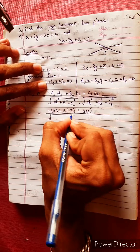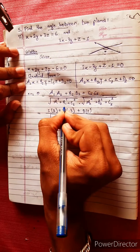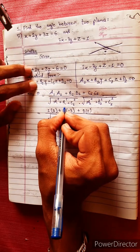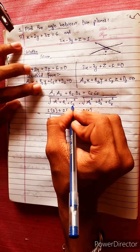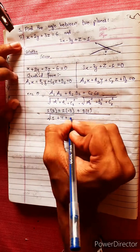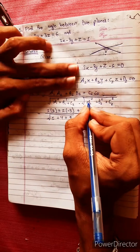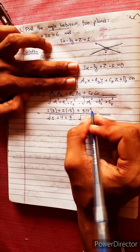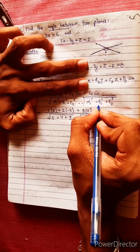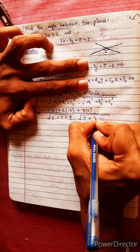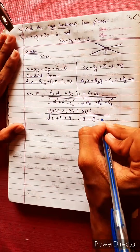Now computing the squares: A1 squared is 1 squared equals 1, B1 squared is 2 squared equals 4, C1 squared is 3 squared equals 9. For the second plane: A2 squared is 3 squared equals 9, B2 is minus 3 so B2 squared is 9, C2 is 1 so C2 squared is 1.